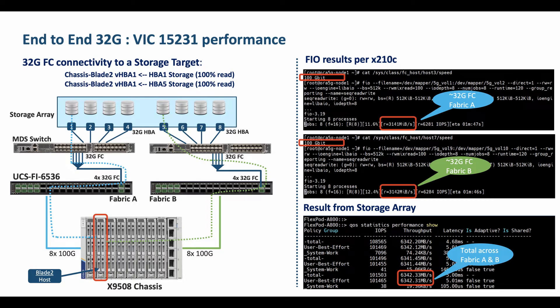In the 5th gen UCS fabric as shown, the X9508 chassis is connected to the UCS6536 fabric interconnect via multiple 100GB links from the 100GB IFM. For the test, Server 2 in the X9508 chassis has a VIC-15231, enabling end-to-end 100GB connectivity from the X210C compute node to the 6536 fabric interconnect. The fiber channel uplink connection from the 6536FI to the Cisco MDS switch uses a 4x32 fiber channel breakout cable.